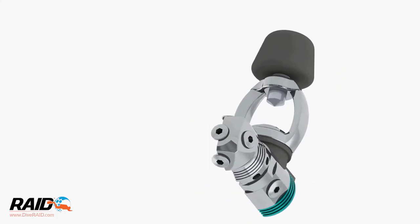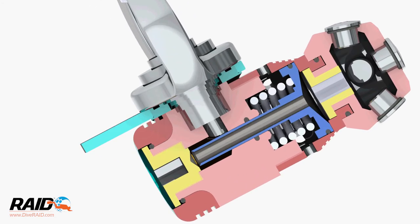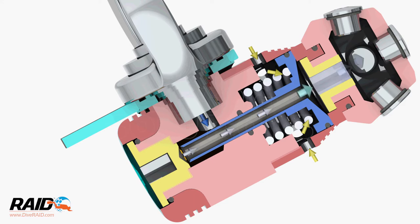This is a balanced piston first stage. Let me explain how it works. The ambient pressure of the surrounding water acts on the front of the piston, shown by yellow arrows. This gives more consistent breathing across a range of cylinder pressures and depths.